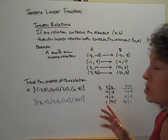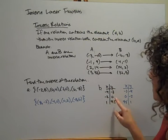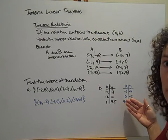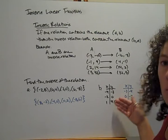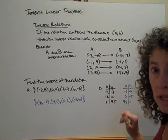From a table, we're just going to do the same thing. So I have this relation here in my table, my x's and my y's, I'm going to swap them. So everything that was in my x column becomes a y value. Everything that was in my y column now becomes an x value. My inverse relations.